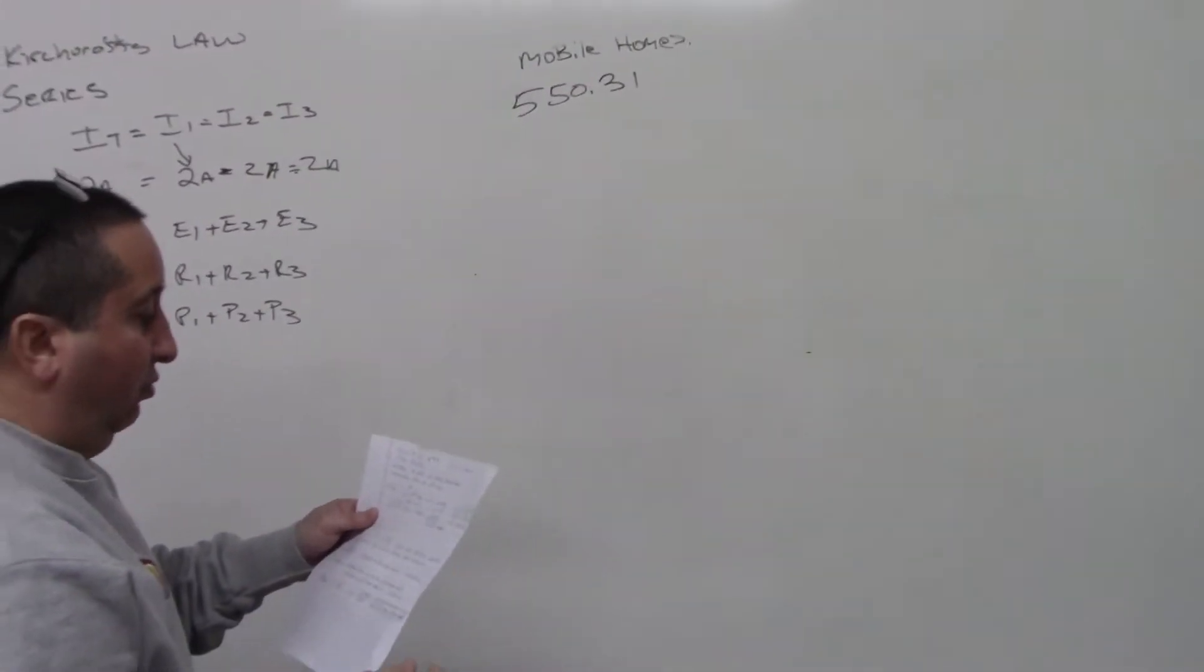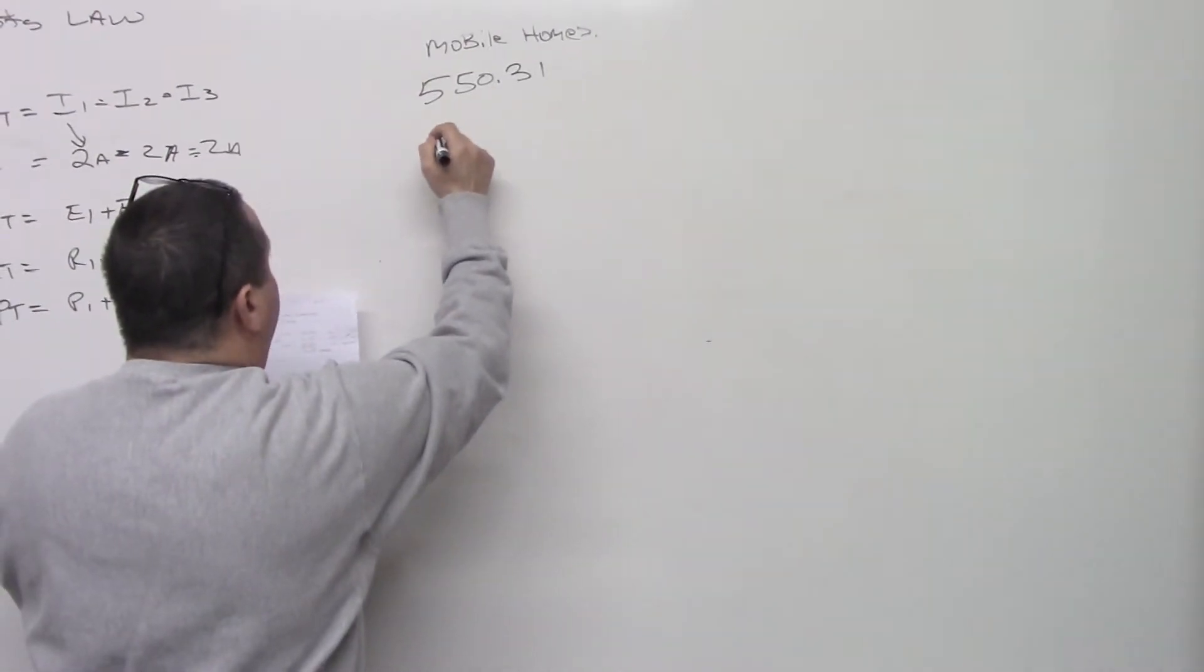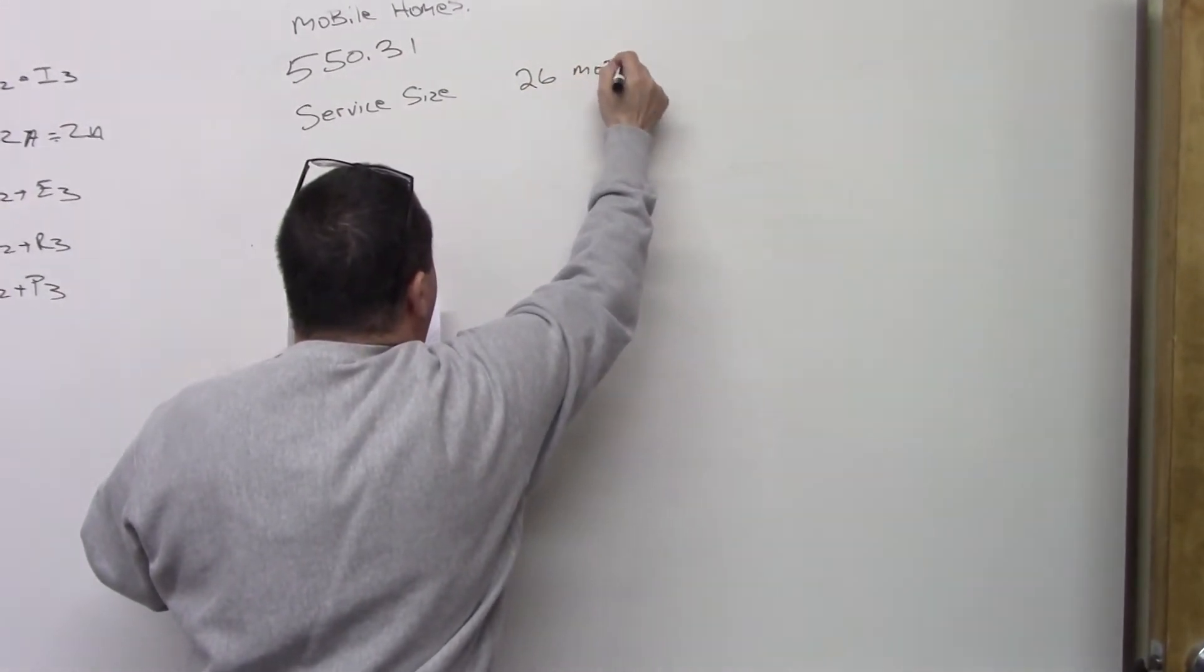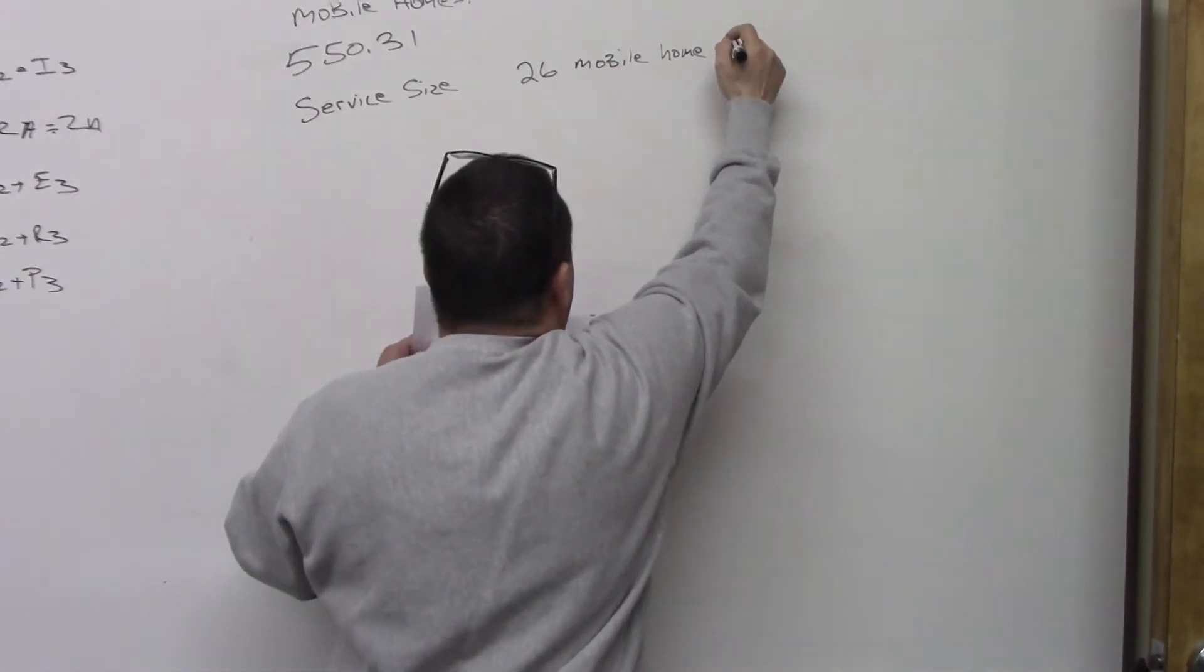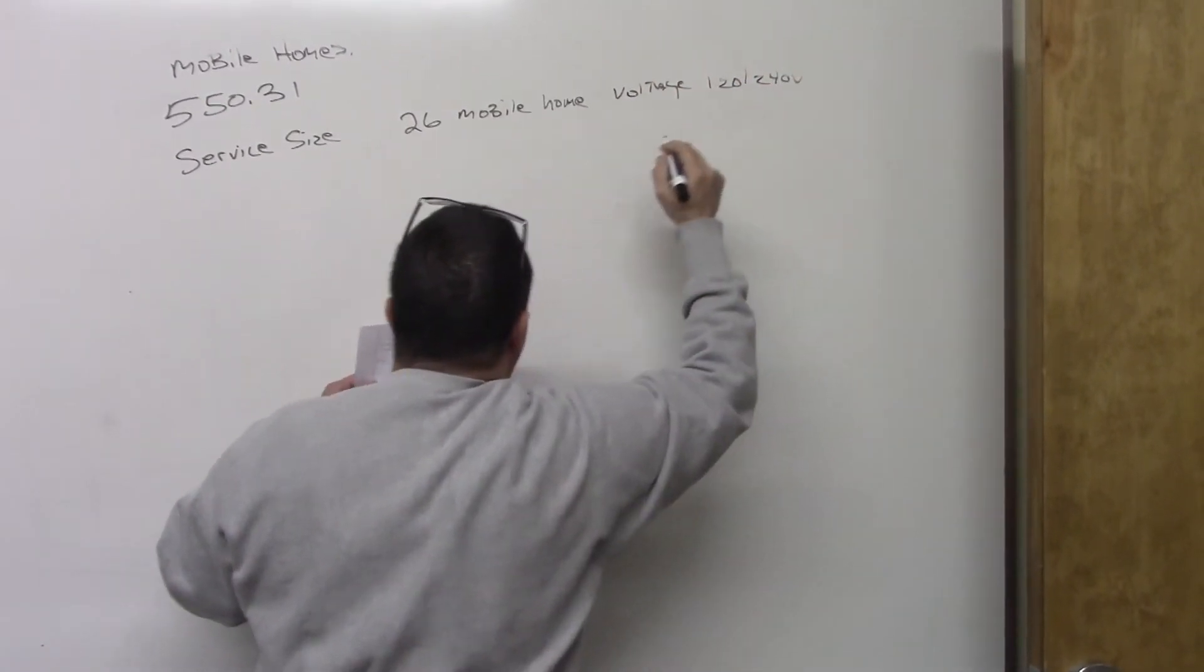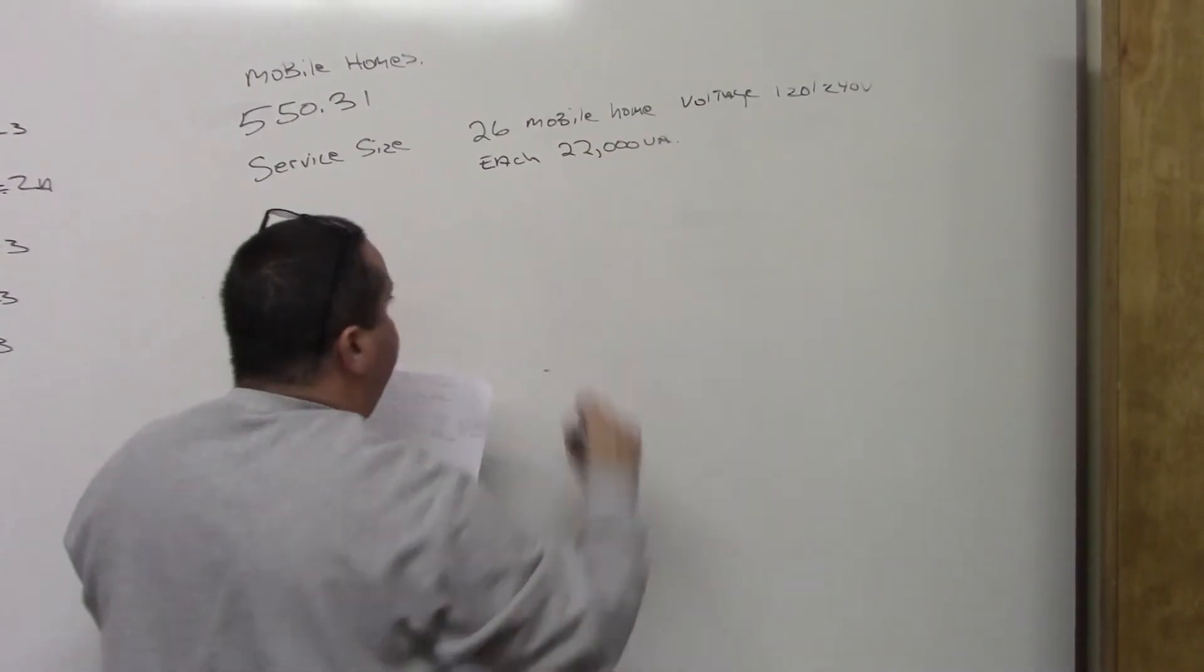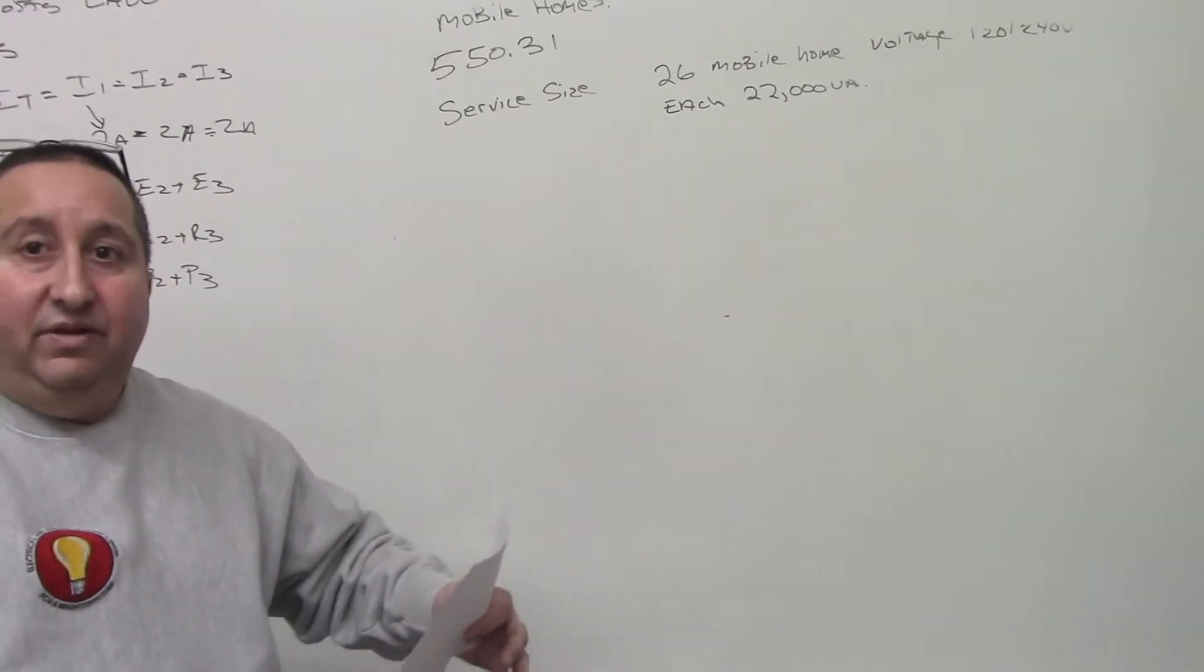So let me explain what is given and what the problem is. We want to know what the service size is for 26 mobile homes. And the voltage for this is 120/240 volts. And each home, we have a calculated load of 22,000 volt amps. So we want to find out the service conductors, the calculated load.